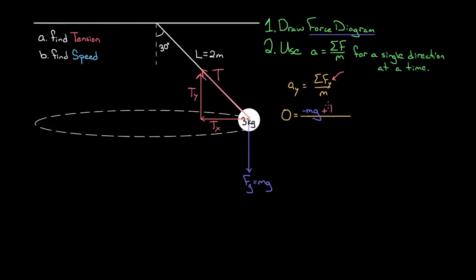I can write Ty in terms of T using trigonometry. Looking at the right triangle: Ty is adjacent to the 30-degree angle, so cosine of 30 equals Ty over T (adjacent over hypotenuse). A common confusion: vertical isn't always the opposite side — here it's adjacent because we know the angle from the vertical. Solving, Ty equals T times cosine of 30 degrees. This is the vertical component of tension I can plug into the net vertical force equation.